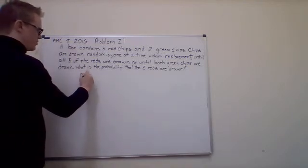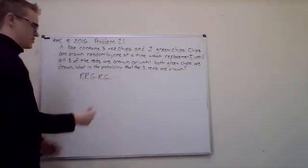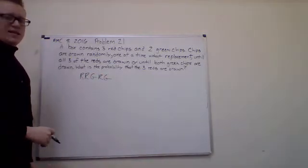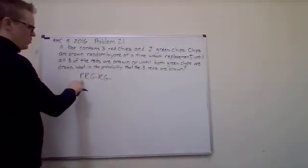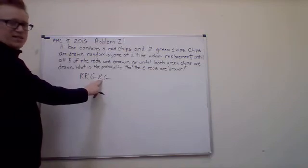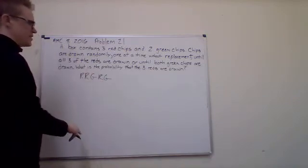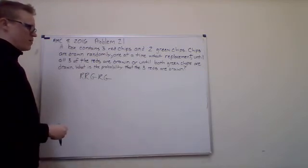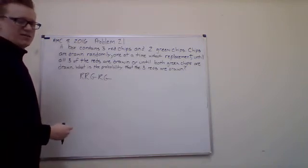So for example, it could go red, red, green, red, green. That's one possible scenario. And we could ask ourselves then which one of them would have been drawn first. The reds would have been drawn first in this case. And so we could list out all of these and in fact, it's not hard to figure out how many there are, even though it doesn't matter for my solution how many there are. We could figure it out if we wanted to. How would we do that?